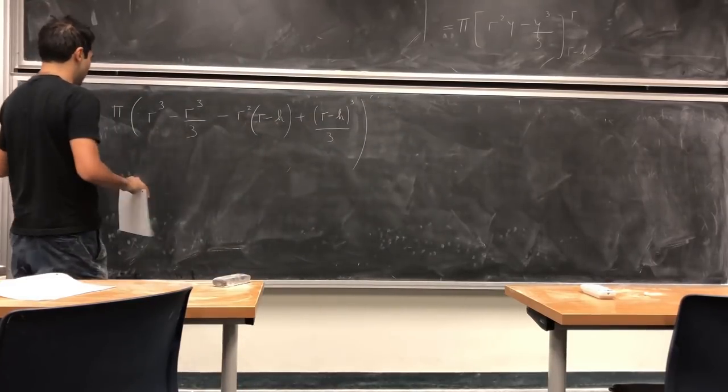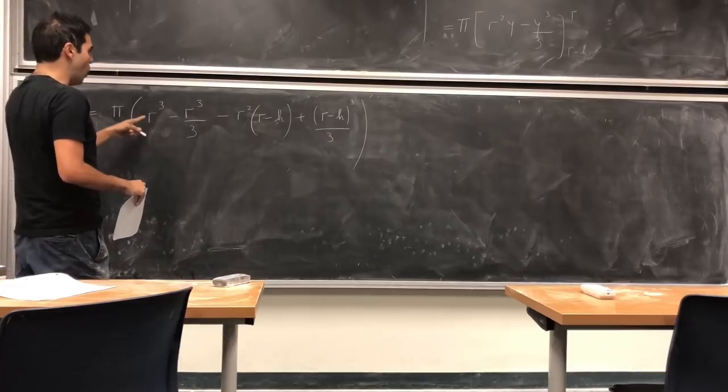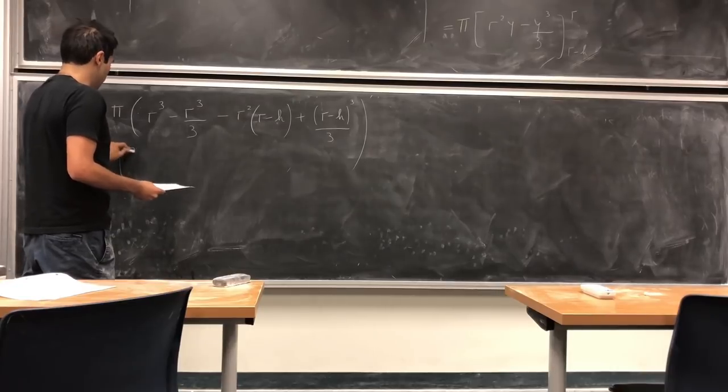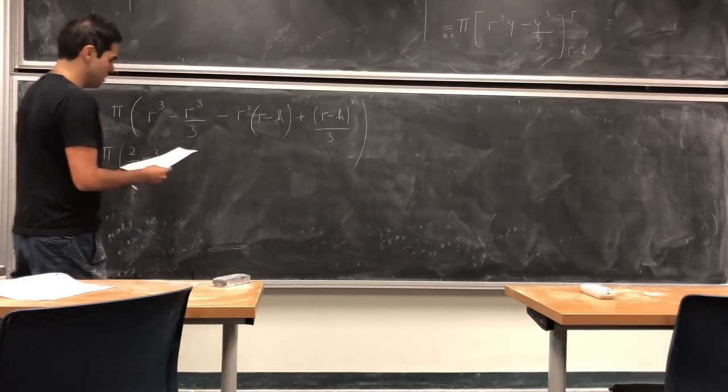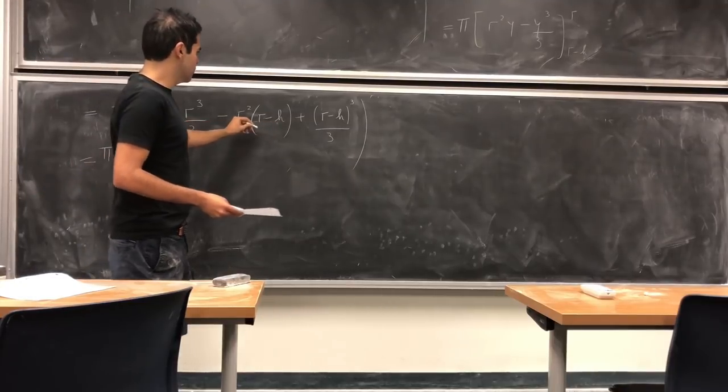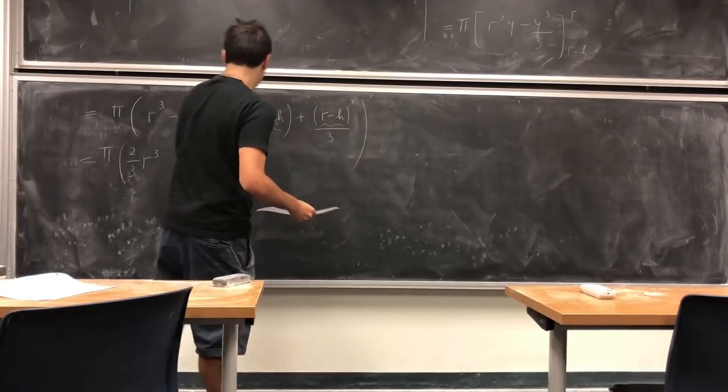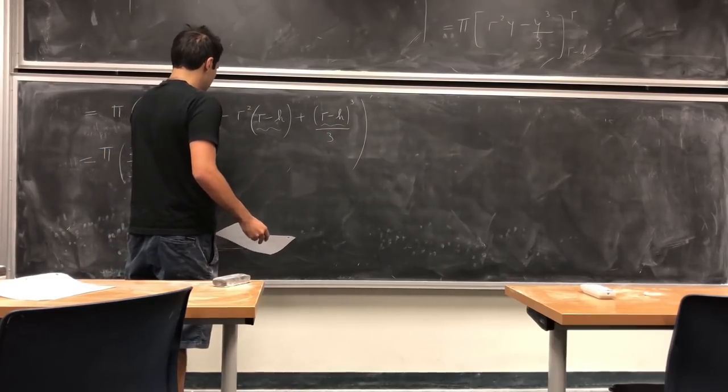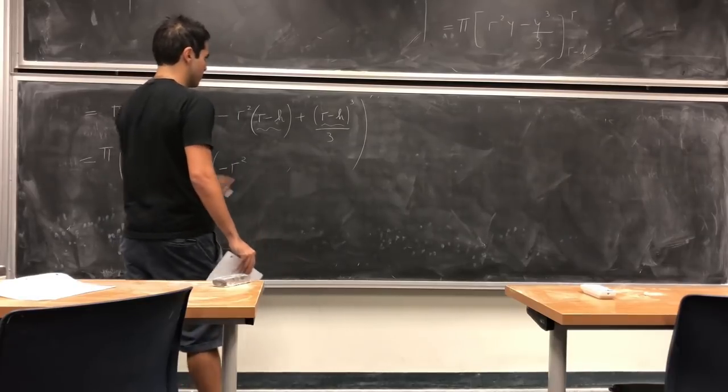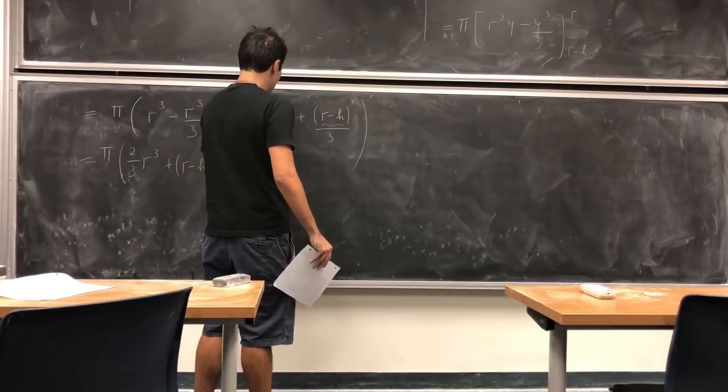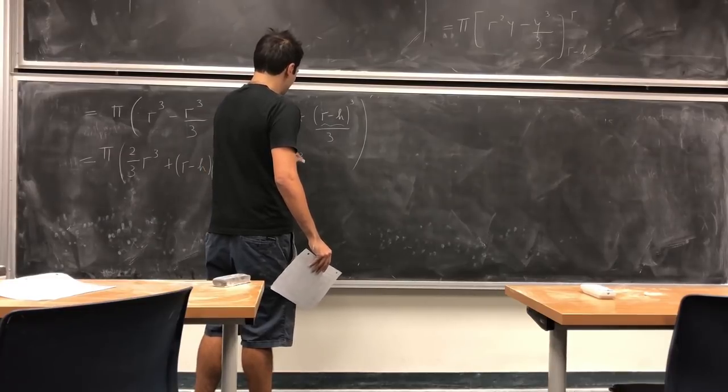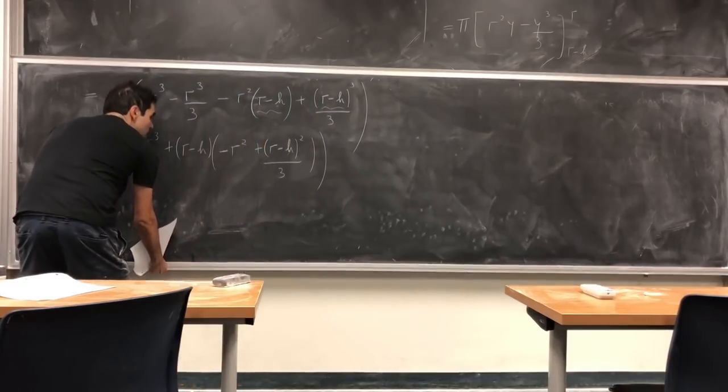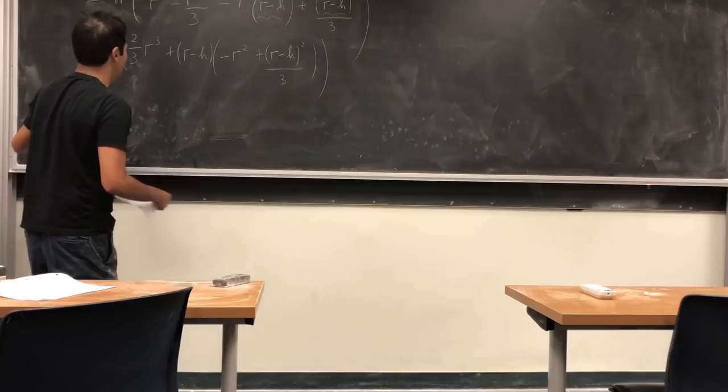Now, the nice thing is, this becomes r³ - (1/3)r³. So π(2/3)r³. And the nice thing is, there's this common factor of r minus h. So let's use that. So plus (r - h) times [-r² + (r - h)²/3].